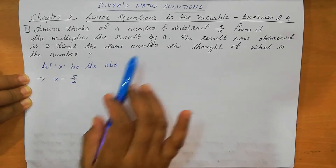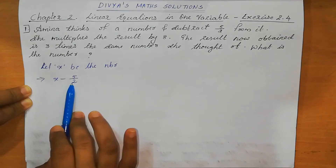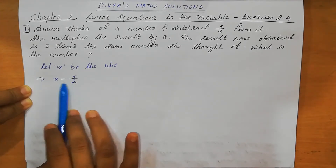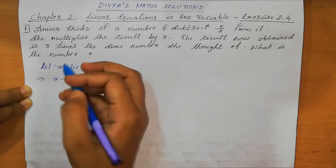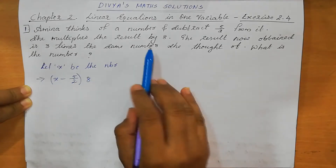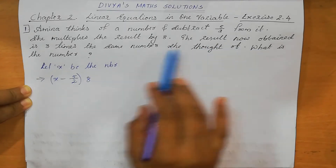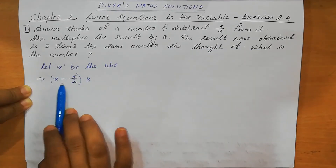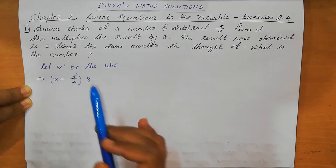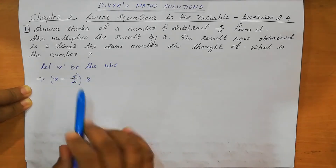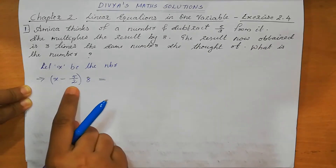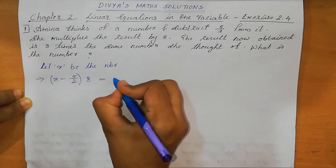She multiplied the result by 8. That means X minus 5 by 2 is the result, so we multiply: X minus 5 by 2 into 8. The result now obtained is X minus 5 by 2 into 8, which we can also write as 5X minus 5 by 2 into 8. This should be equal to 3 times.